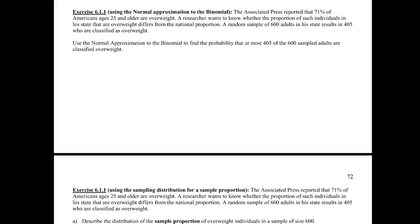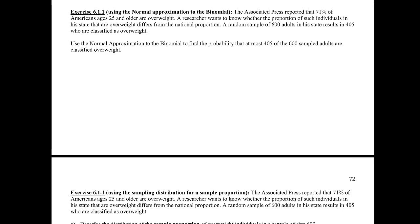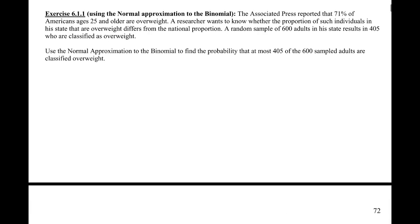In our last video for 6.1, we're going to see that approximate normal distribution in action. The first thing we're going to do is remind ourselves of what we did in part 5. We can see that the Associated Press reported that 71% of Americans 25 and older are overweight. The researcher wants to know whether the proportion of such individuals in his state differs from the national proportion. A random sample of 600 adults results in 405 classified overweight. We've been given three things here. One is the 71%.